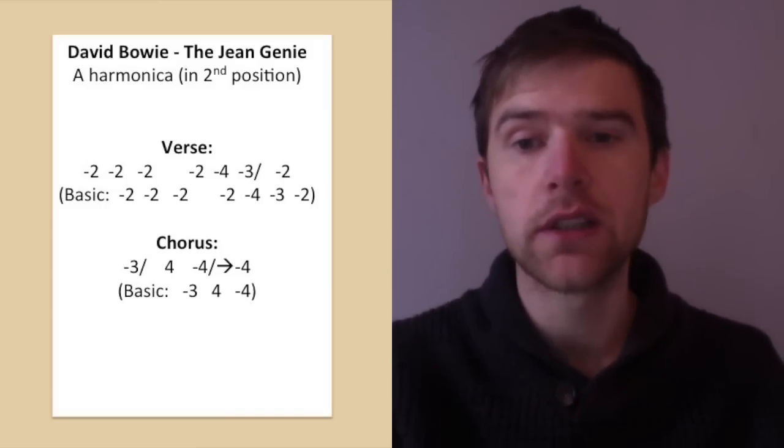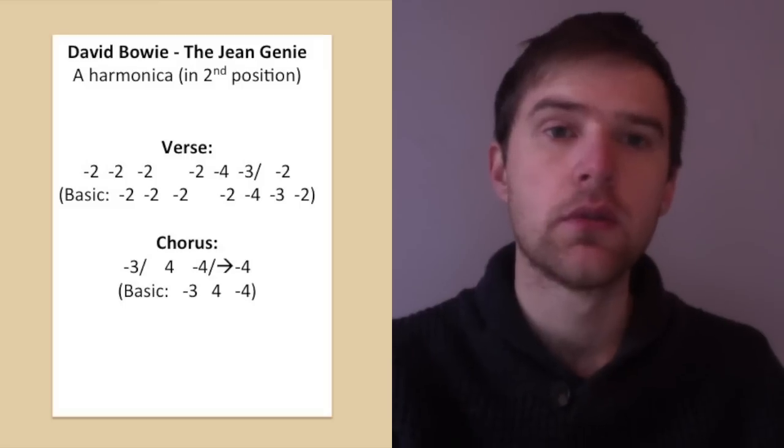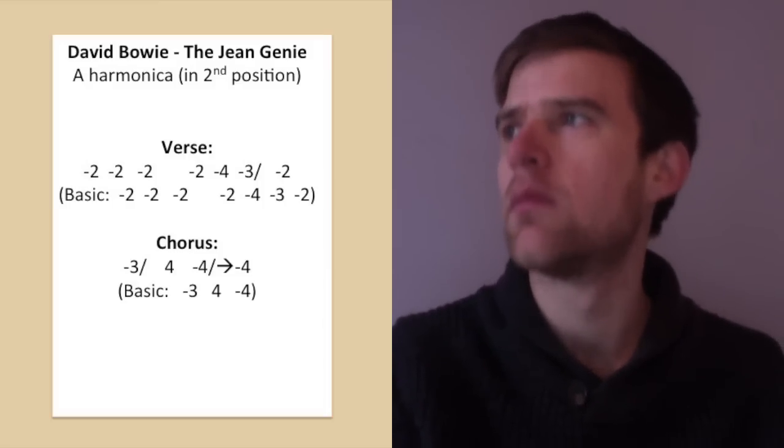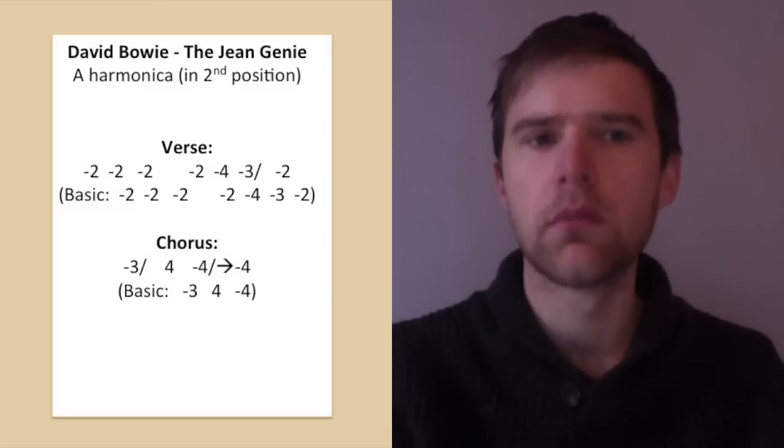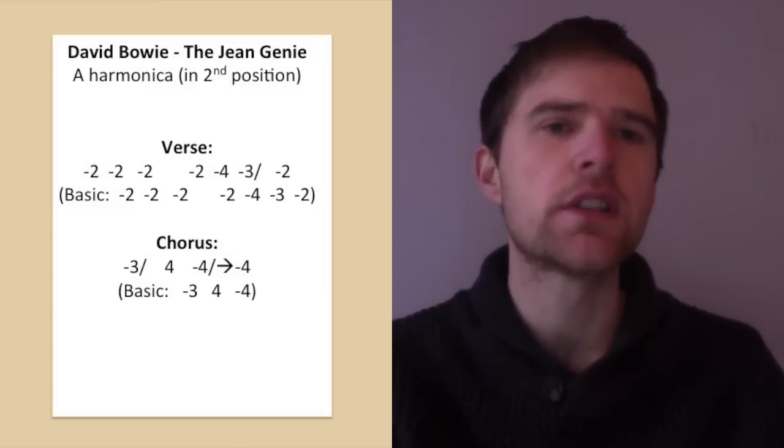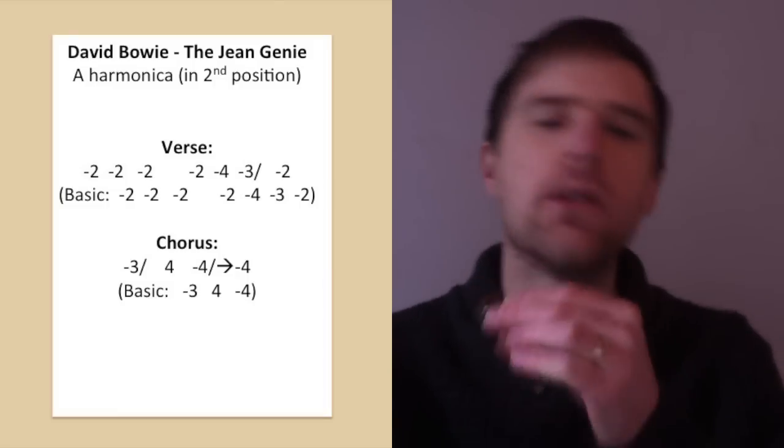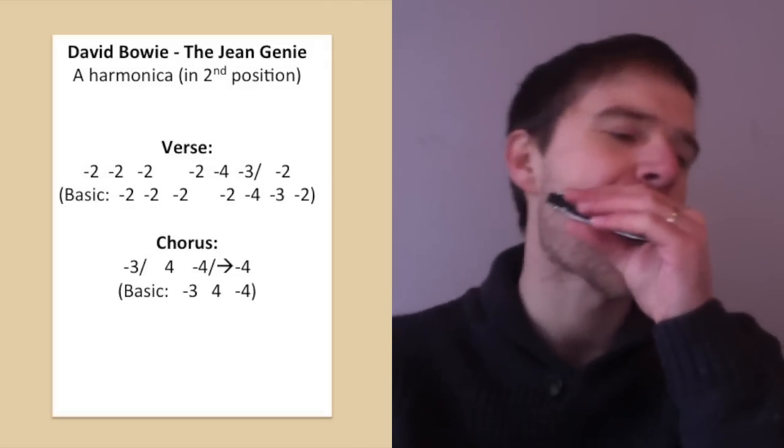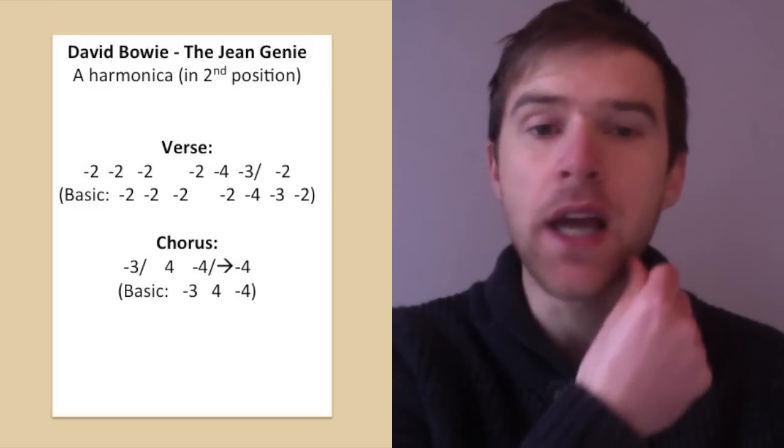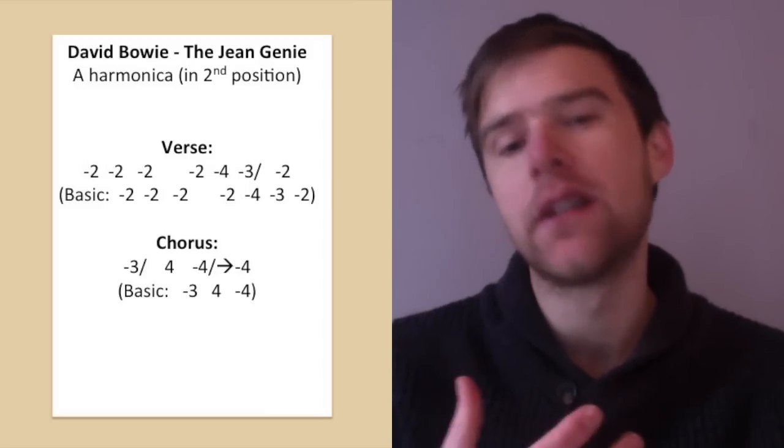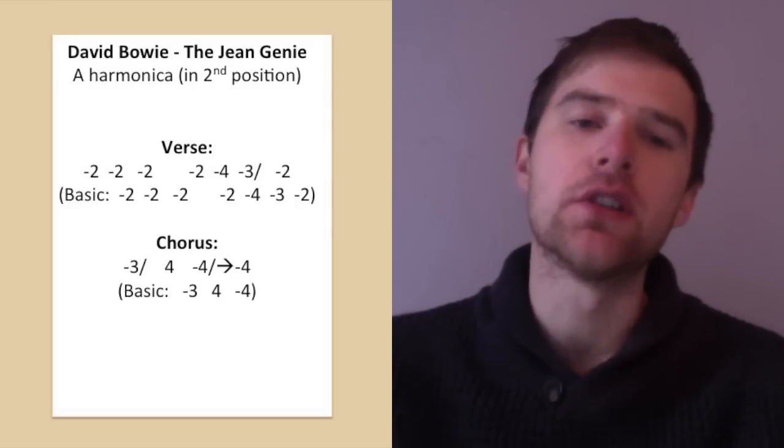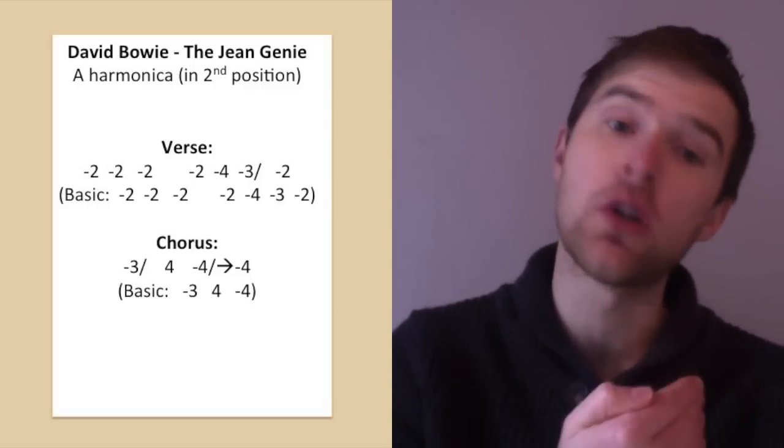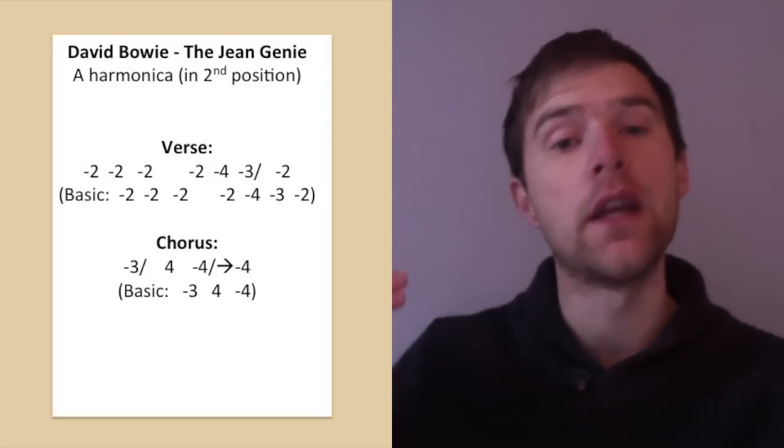The other thing to look at is the chorus. So let's have a little listen to what happens during the chorus. So there's that kind of distinctive riff. Nice little riff there. Again there's a note that is a little bit of a bend I would say, but if you haven't got the bend it really doesn't matter. You can still play a very close note. So the three notes that I'm playing are the three draw semitone bend. If you've not got that just play the three draw. Then the four blow. And then the four draw.